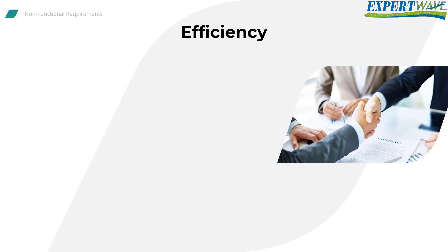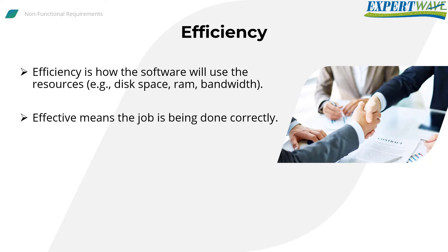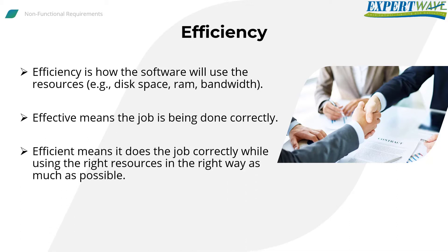Efficiency is how the software will use resources like disk space, RAM, and bandwidth. It's essential to know the difference between effective and efficient. Effective means the job is being done correctly. In contrast, efficient means it does it correctly while using the right resources in the right way as much as possible.